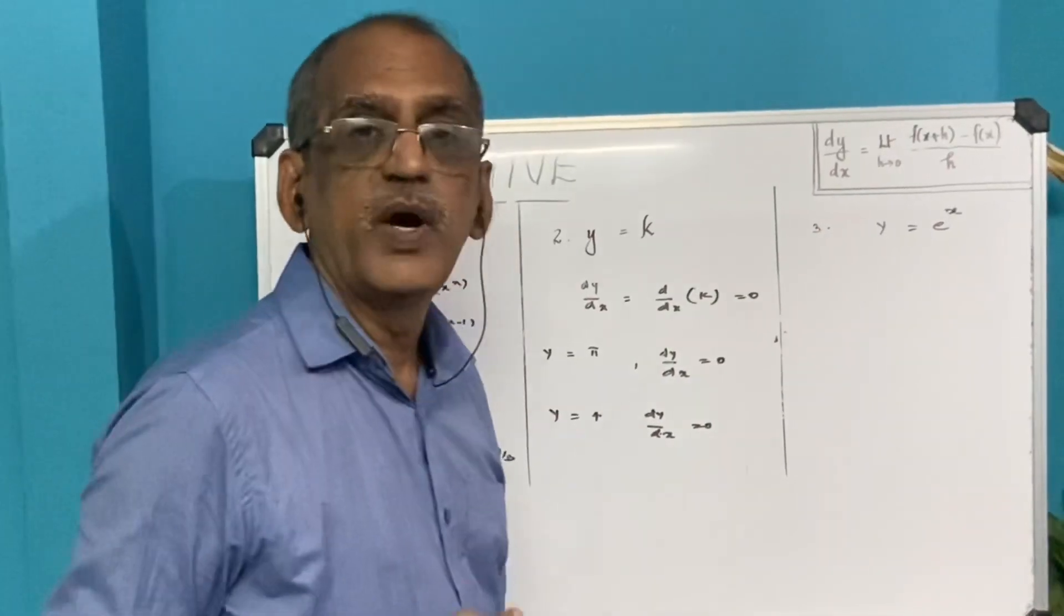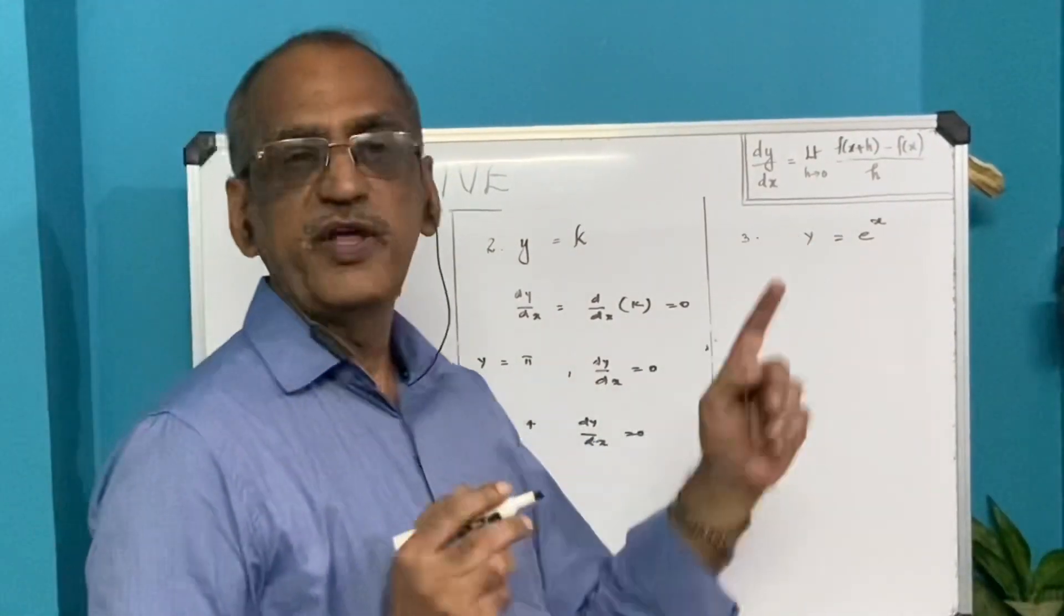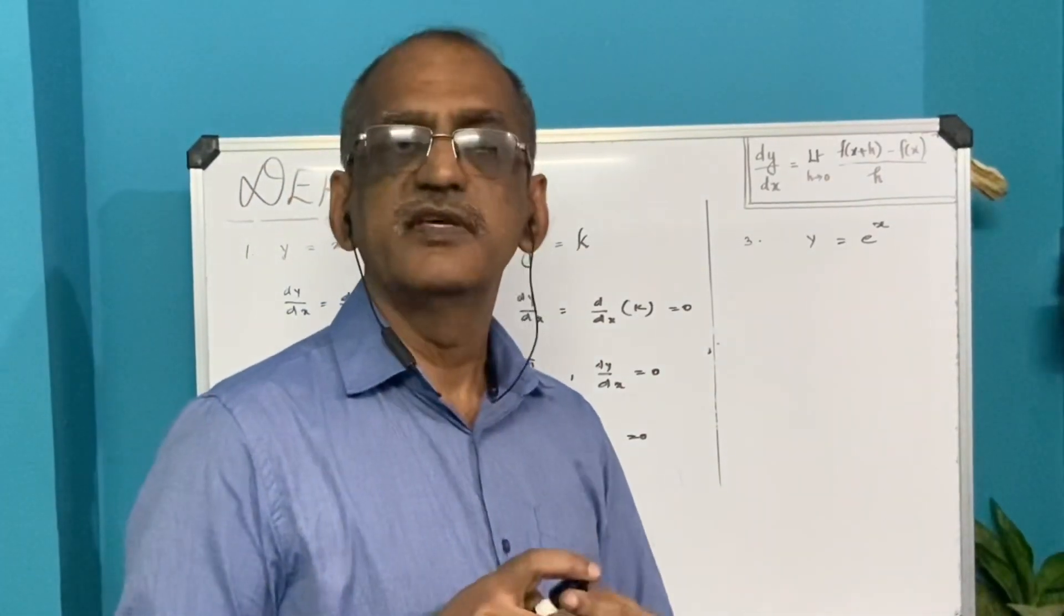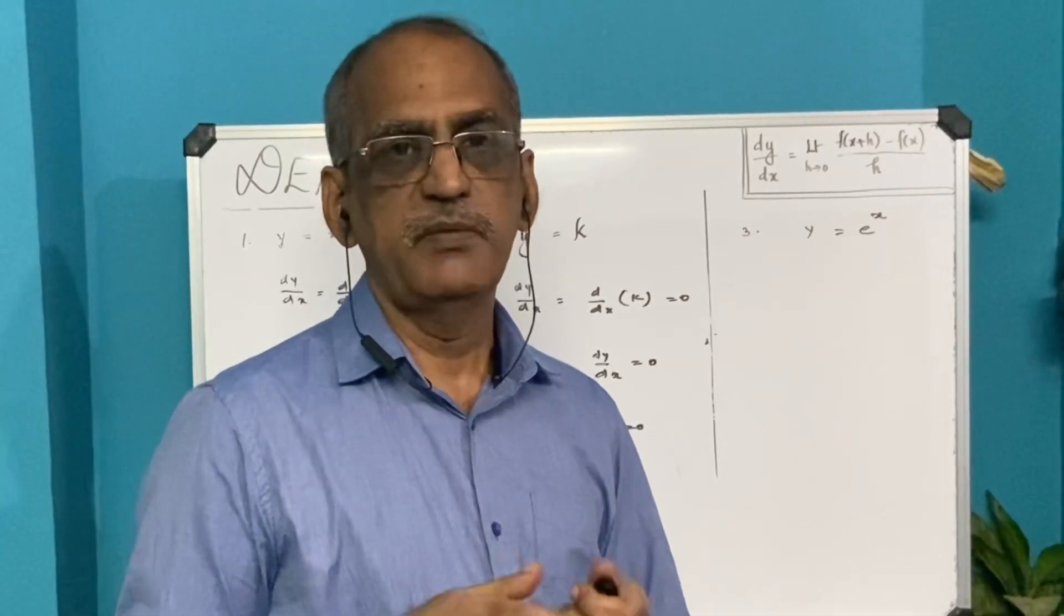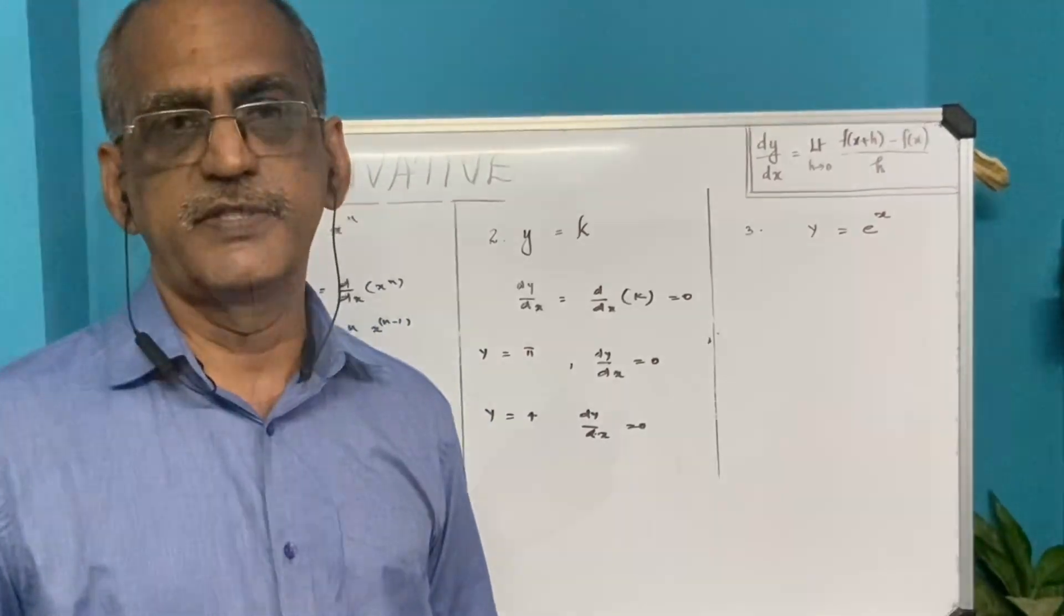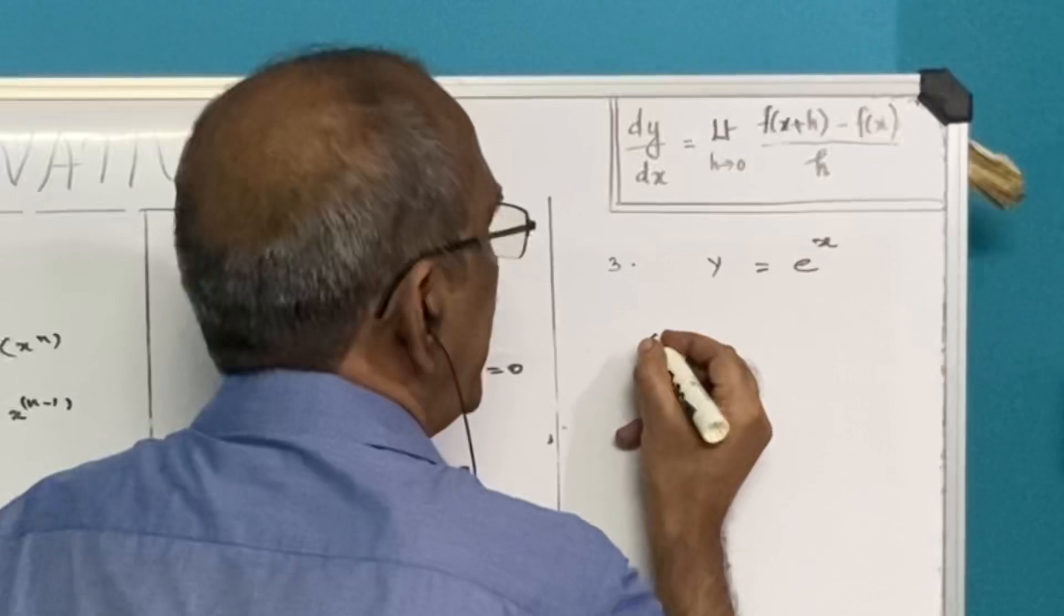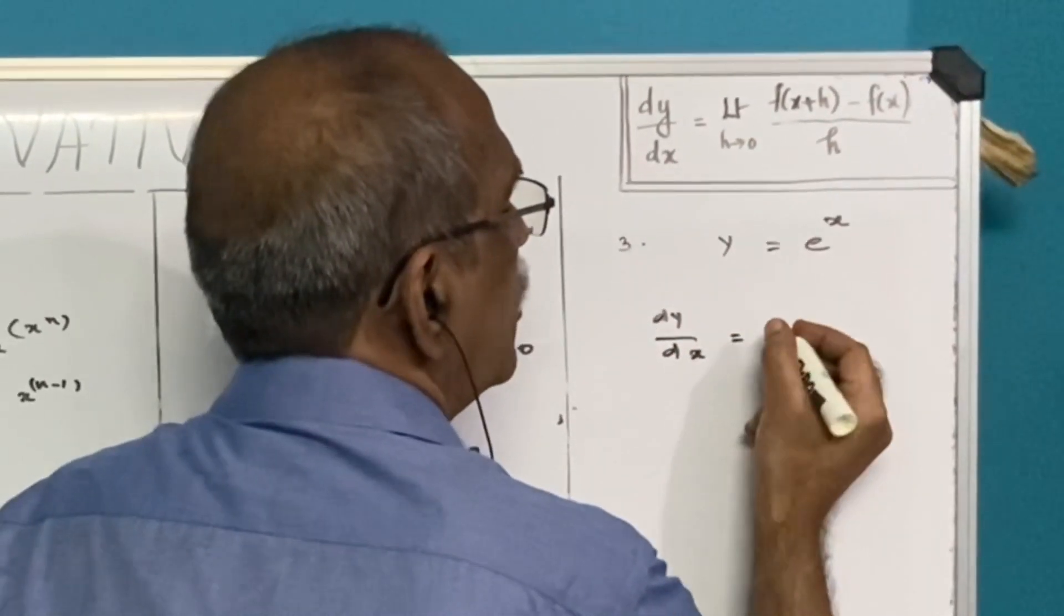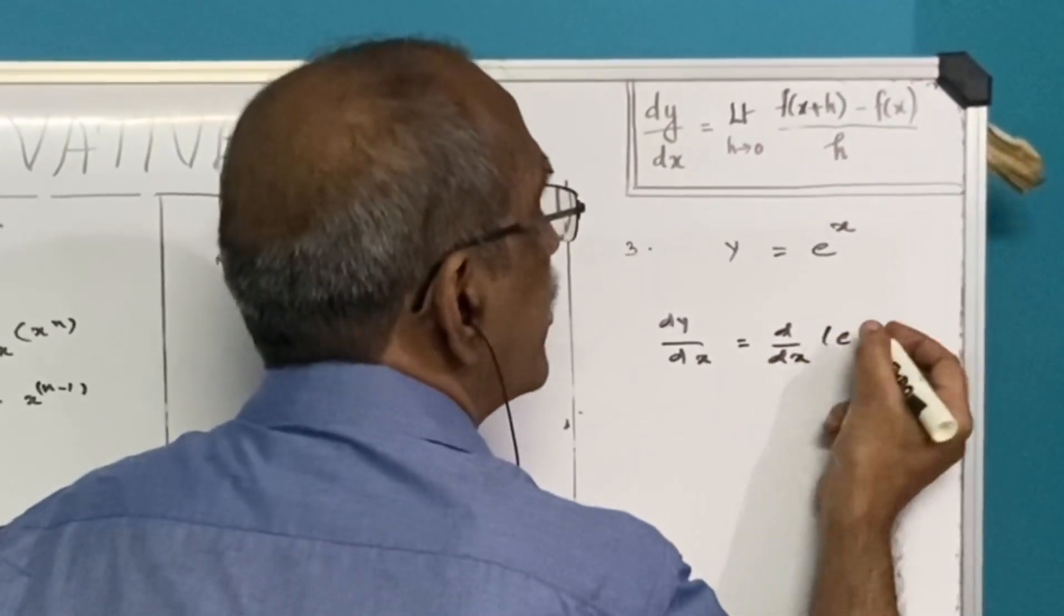Let us go to the third one, the exponential function. Y equals e raised to x. E raised to x is the only function whose derivative is nothing but itself. So d/dx of e raised to x is nothing but e raised to x. If y equals e raised to x, then dy/dx will be equal to e raised to x.